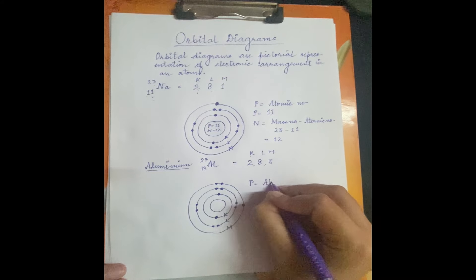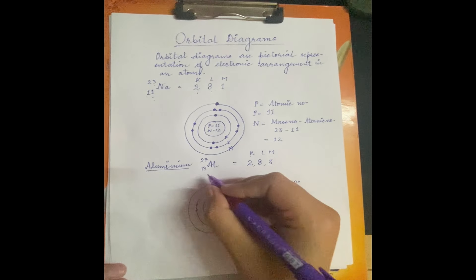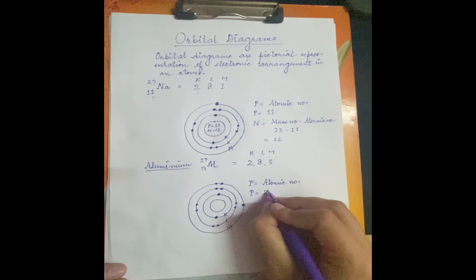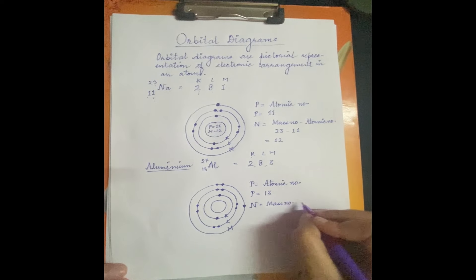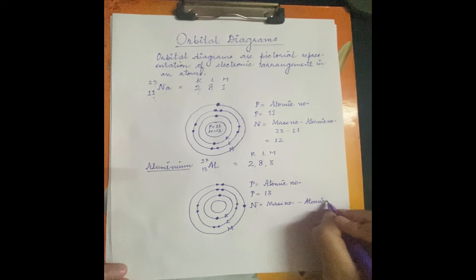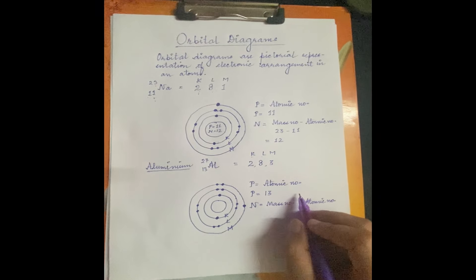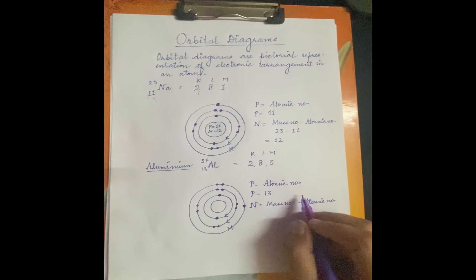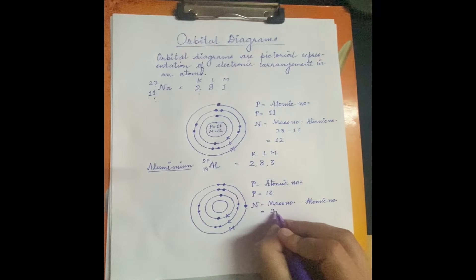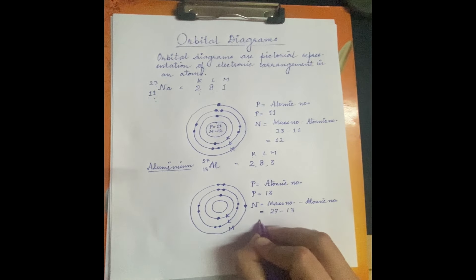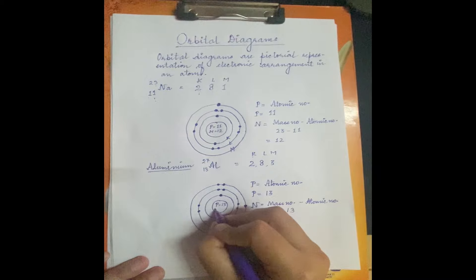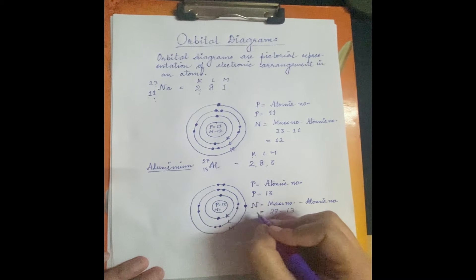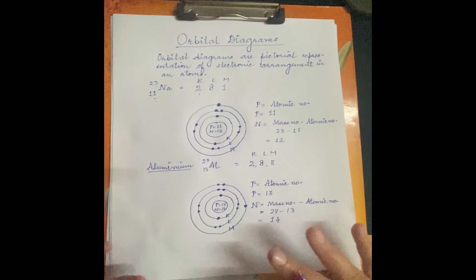In the nucleus, we show protons and neutrons. Protons equal atomic number, which is 13. For neutrons: mass number 27 minus atomic number 13 equals 14. So protons = 13, neutrons = 14. This completes the orbital diagram of aluminium. If you have a proper diagram, it looks neat and clean.